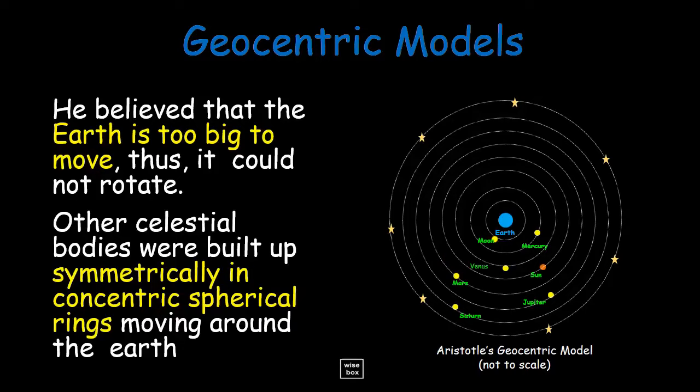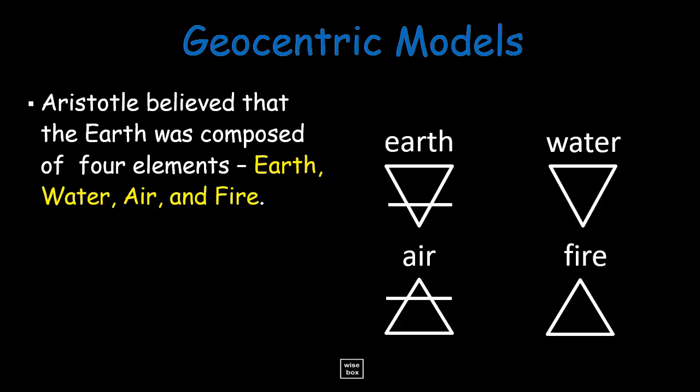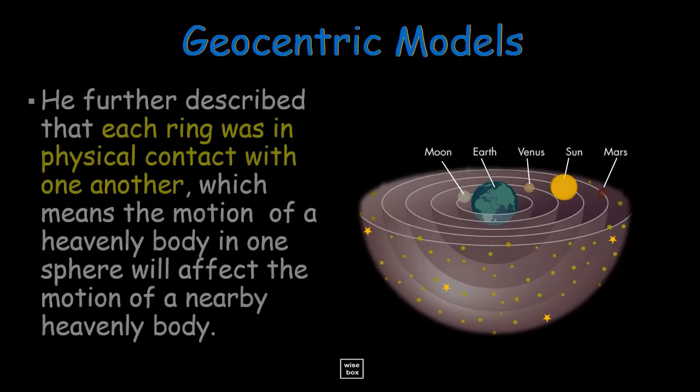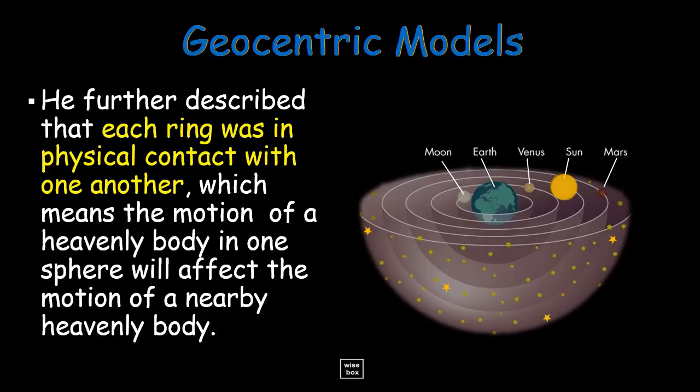Aristotle believed that the Earth was composed of four elements: Earth, water, air, and fire. Beyond Earth are the planets and the moon, which revolved in spherical rings. He further described that each ring was in physical contact with one another, which means the motion of a heavenly body in one sphere will affect the motion of a nearby heavenly body.